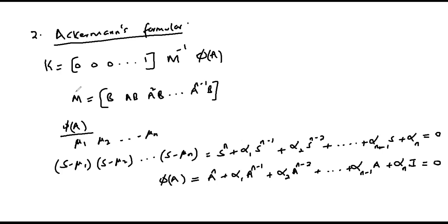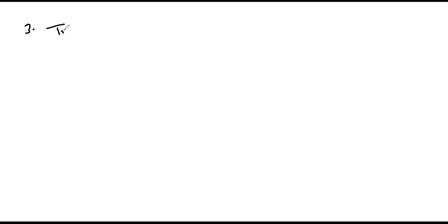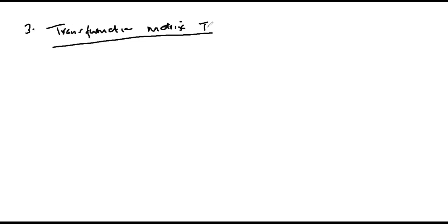Through that we can obtain our feedback gain matrix K from Ackermann's formula. Method number three is the determination of the feedback gain matrix K by use of the transformation matrix T.